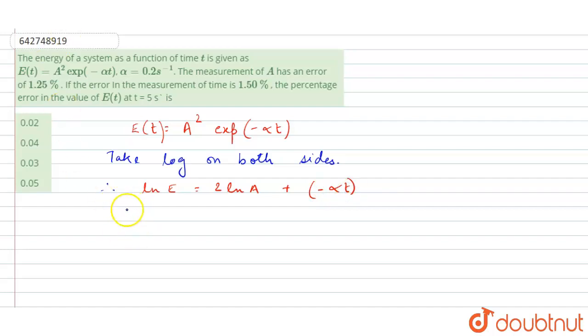Now differentiate both sides. Differentiate the above equation on both sides. So it will come: dE/E = 2(dA/A) + (-α dt).